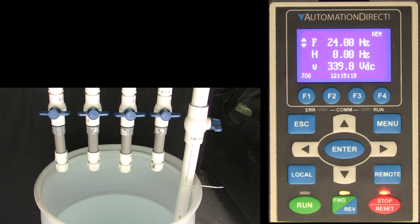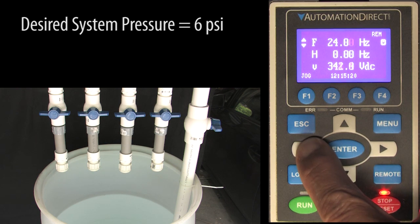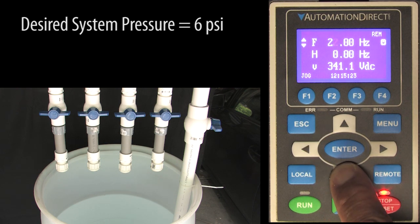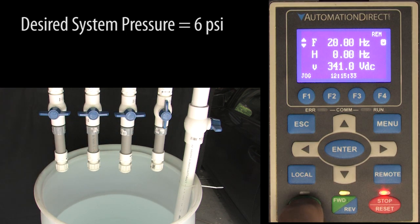Let's fire this thing up and see what we have. Suppose we need to maintain a system pressure of 6 psi. So I'll set the drive frequency to something low, maybe 20 Hz as a starting point, open the first valve and start the drive.